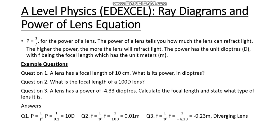Question two: what is the focal length of a 100 diopter lens? We rearrange the formula so that focal length is the subject: f = 1/P = 1/100 = 0.01 m. For question three, we use the same formula f = 1/P, substituting in the given values: f = 1/(−4.33), which gives a focal length of approximately −0.23 m. Since the focal length is negative, this is a diverging lens, as the focal point for a diverging lens is always negative, whereas for a converging lens it is always positive.